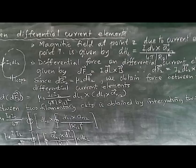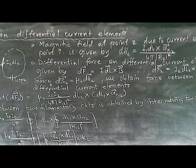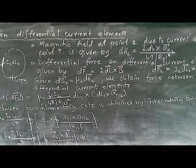The differential force on a differential current element is given as dF = i·dl cross B, where l is the length of the loop and B is the magnetic flux density. Therefore, the differential force on current element 2 due to point z is dF2 = i2·dl2 cross dB2, where dB2 = mu2 into dH2. This comes from the relation B = mu times H, which is the property of magnetic flux density.